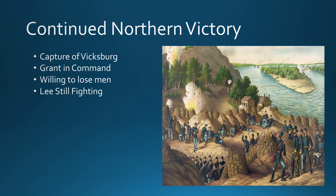Amidst the change in strategy and the Union finally having a good commander, along with the capture of Vicksburg, the war is not over by any stretch. The Confederacy is still fighting, and Lee is not going to give up easily. The Confederates are also looking toward the November 1864 election, hoping Lincoln would be voted out and somebody willing to compromise with the South or end the war on favorable Southern terms would take over.